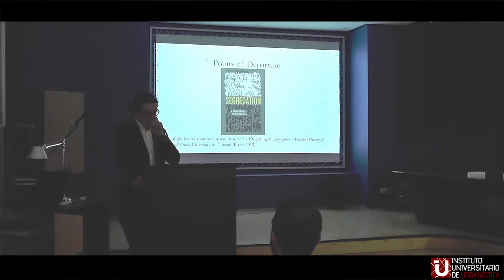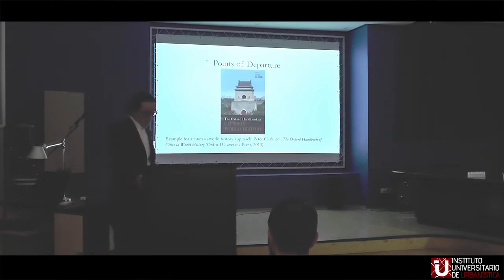The third approach that global urban history can build on is what I call cities in world history. These are encyclopedia-like collections that are composed of a series of studies on circumscribed urban contexts. Collectively, they add up to a panorama of cities around the world. A good example for this approach is the Oxford Handbook of Cities in World History, which seeks to provide planetary coverage through chapters on cities in specific world regions. That was published in 2013. In this we find chapters on cities in different world regions, on certain types of cities, as well as on themes in urban history.